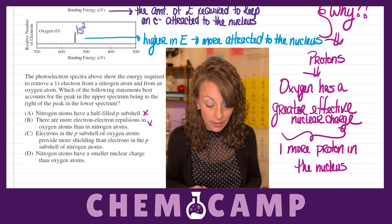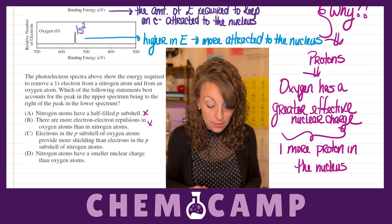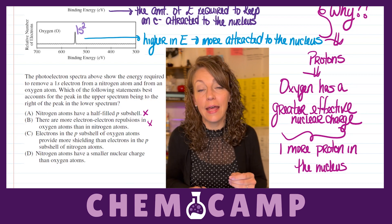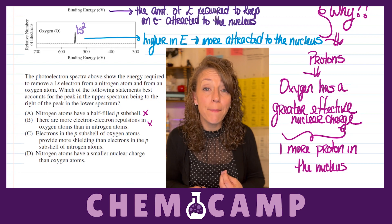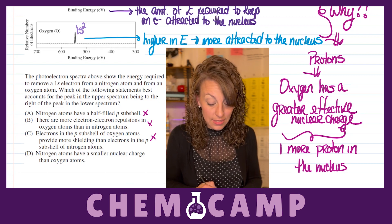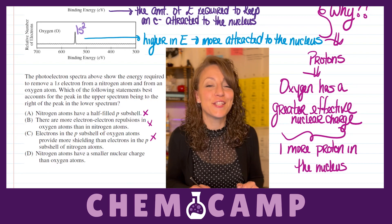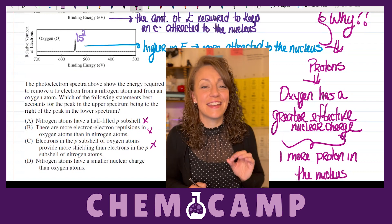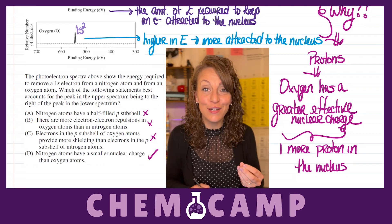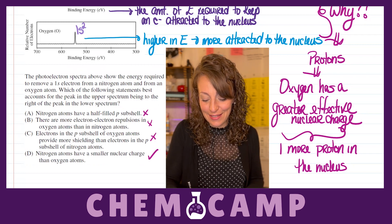Letter C states that electrons in the p subshell of oxygen provide more shielding than electrons in the p subshell of nitrogen. The electrons that provide shielding are the core electrons — the inner electrons, which are the 1s electrons in this case — so this is not the answer. Letter D states nitrogen atoms have a smaller nuclear charge than oxygen atoms. This is true: since nitrogen has one fewer proton, it has a smaller effective nuclear charge and cannot attract those electrons as tightly to the nucleus. So letter D is your answer.